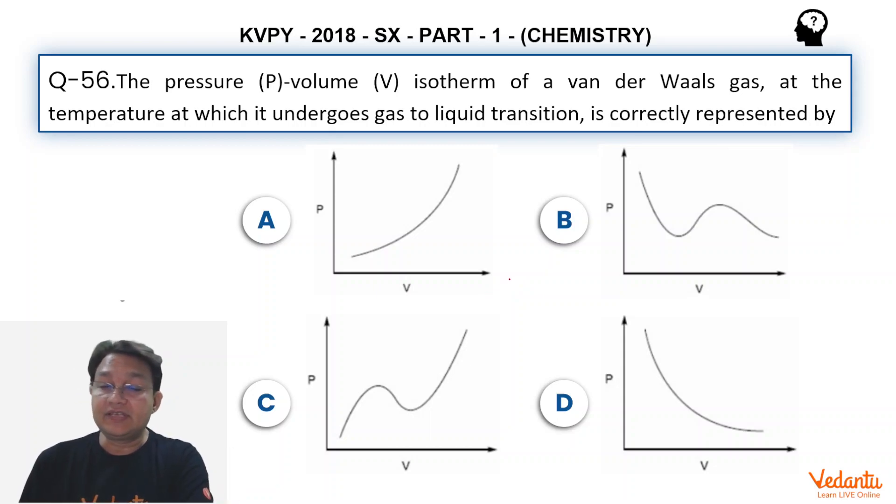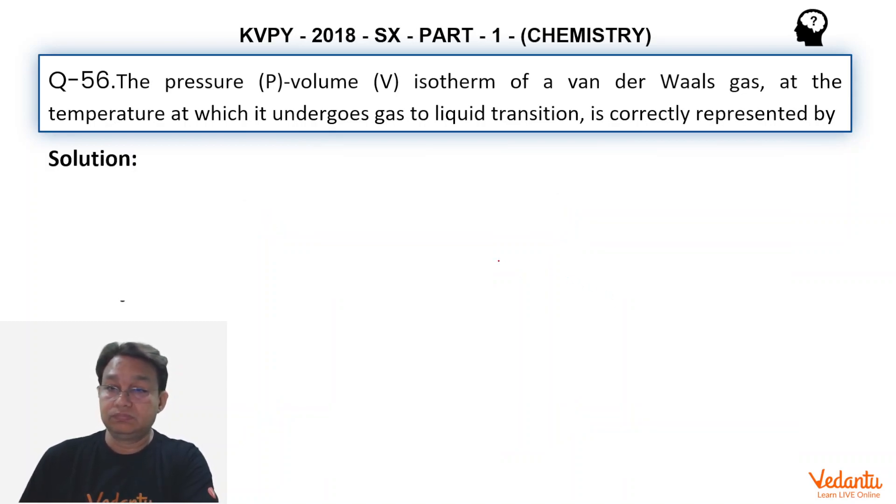Now P vs V graph as we know for the ideal gas looks like option D. For the ideal gas it looks like option D at constant temperature, that's called Boyle's law.